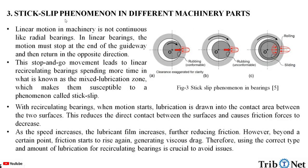Stick-slip phenomena in different machinery parts: linear motion in machinery is not continuous like in radial bearings. In linear bearings, the motion must stop at the end of the guideway and then return in the opposite direction. This stop-and-go motion leads to linear recirculating bearings spending more time in what is known as the mixed lubrication zone, which makes them susceptible to a phenomena called stick-slip. With recirculating bearings, when motion starts, lubrication is drawn into the contact area between the two surfaces.